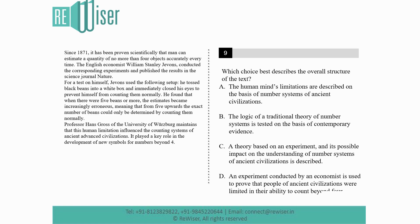For a test on himself, Jevons used the following setup: he tossed black beans into a white box and immediately closed his eyes to prevent himself from counting them normally. He found that when there were five beans or more, the estimates became increasingly erroneous, meaning that from five upwards, the exact number of beans could only be determined by counting them normally.